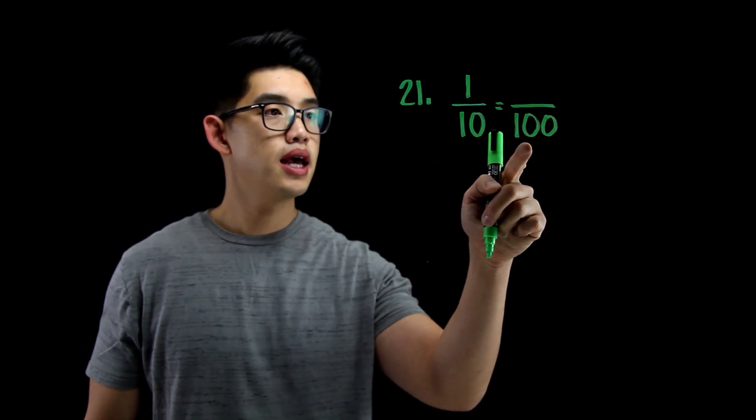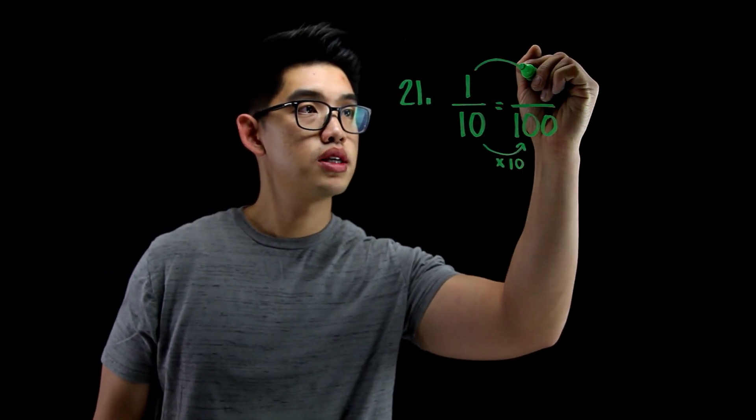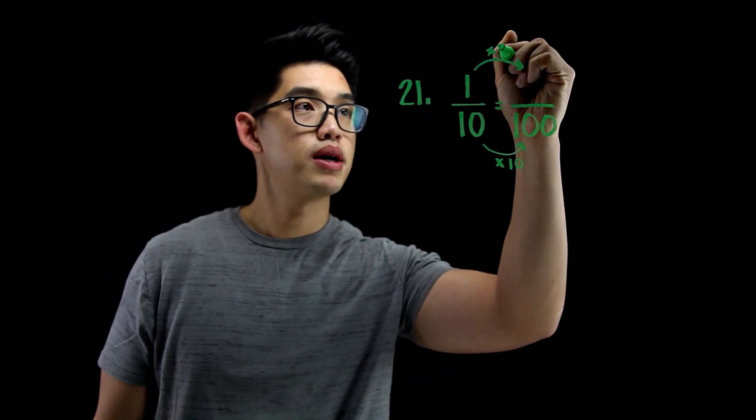So let me see. Oh, 10 became 100 because I multiplied by 10. So I got to do the same thing on top to the numerator to keep it equivalent. So multiply by 10.